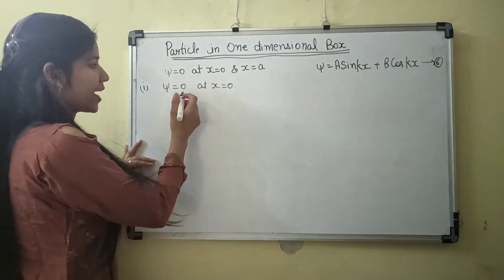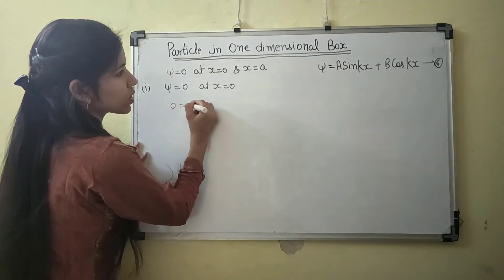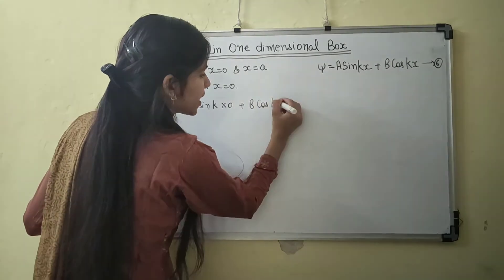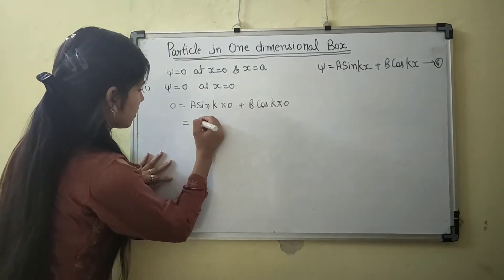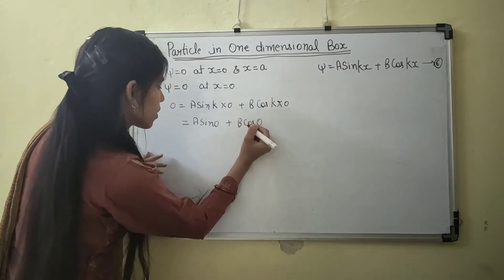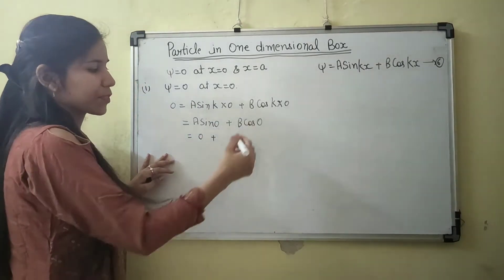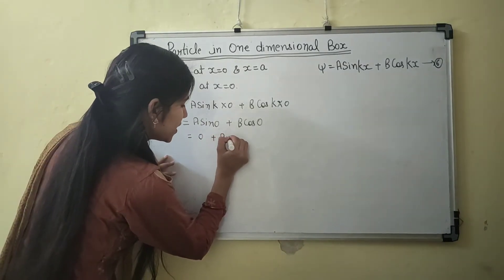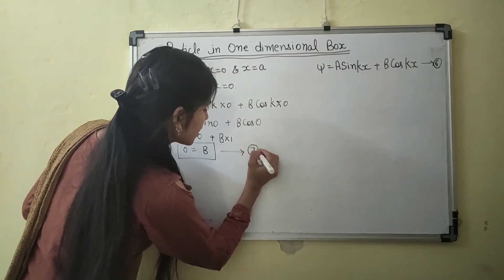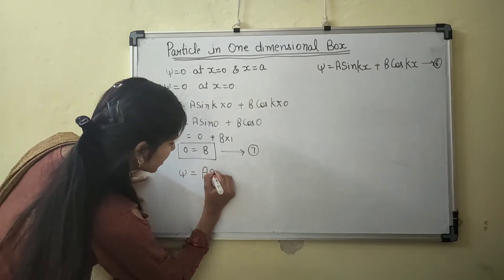Applying the boundary condition ψ = 0 at X = 0 into equation 6: 0 = A sin(K·0) + B cos(K·0). Since sin(0) = 0 and cos(0) = 1, this gives 0 = B, so B = 0. Comparing equations 6 and 7, the wave function simplifies to ψ = A sin(KX).